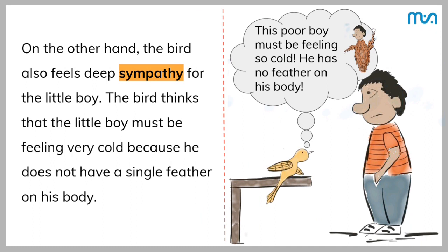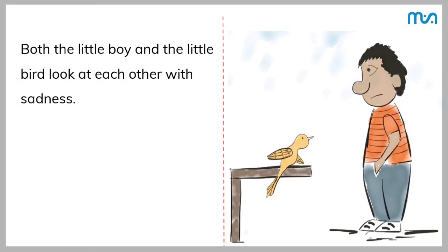On the other hand, the bird also feels deep sympathy for the little boy. The bird thinks that the little boy must be feeling very cold because he does not have a single feather on his body. In the comic, the bird thinks, this poor boy must be feeling so cold, he has no feather on his body. So both the little boy and the little bird look at each other with sadness, with sympathy.